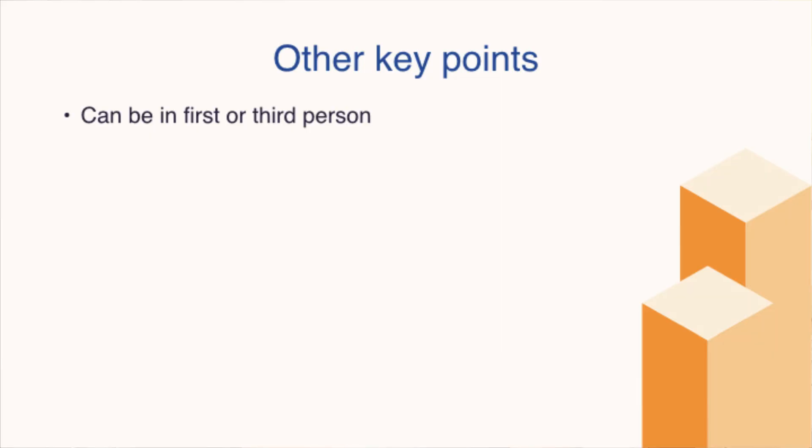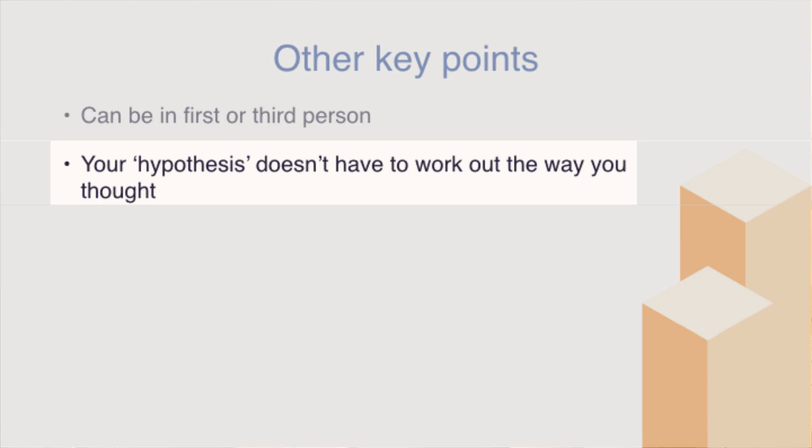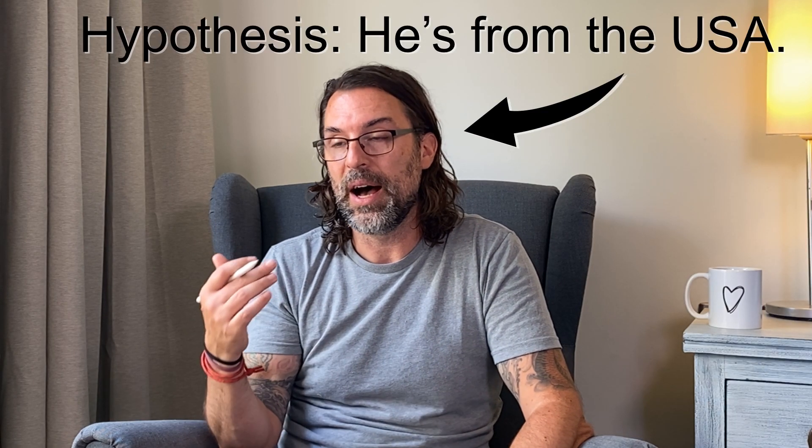Some other key things to keep in mind: you can write in first or third person. Your hypothesis does not have to work out the way you thought. If you find out there is no relationship, that's okay — go ahead and say that. The most important thing is that you are talking about the mathematics with knowledge and interpreting it properly. Don't try to force the mathematics to support a conclusion it doesn't support.